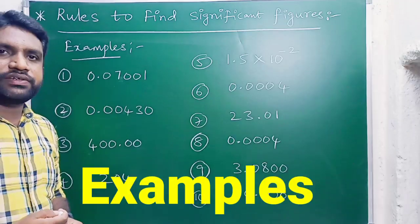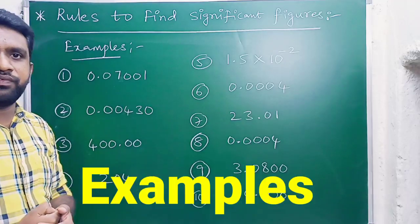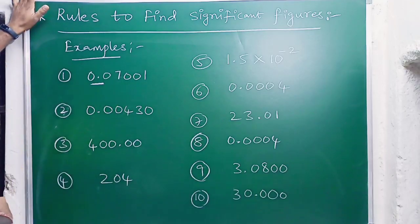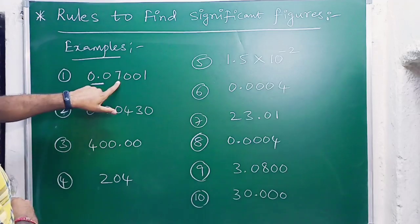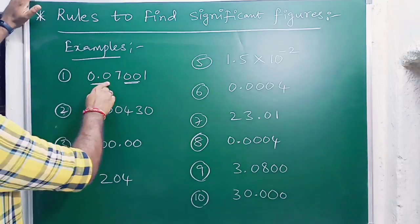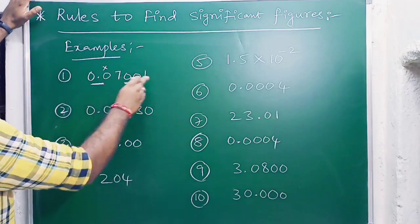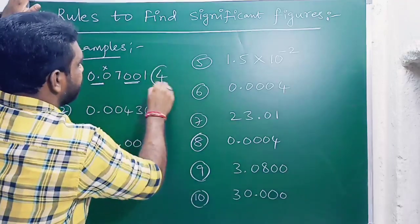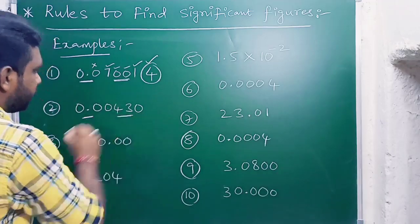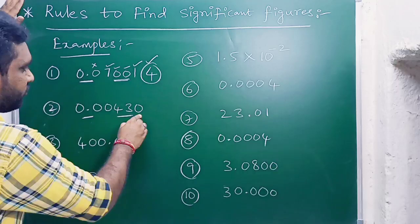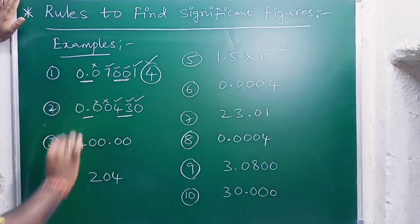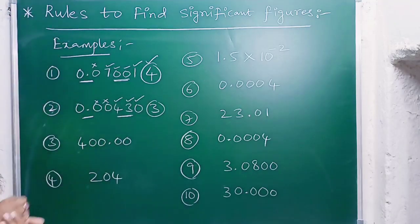Let's see examples to find the number of significant figures. In example one, observe the decimal point — non-zero digits are two, they are significant; two trapped zeros are also significant; the leading zero is not significant. So there are four significant figures. In example two, with a decimal point, two non-zero digits are significant, the trailing zero in case of decimal point is also significant, and two leading zeros are not significant — total three significant figures.